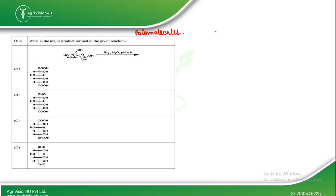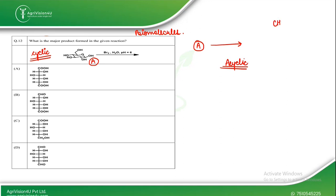When this structure undergoes hydrolysis, we can convert glucose from its cyclic form to its acyclic form. The structure of glucose in acyclic form is: CHO at the top, then four carbons with OH, H, OH, OH on one side and H, OH, H, H on the other side, with a CH₂OH unit at the bottom.